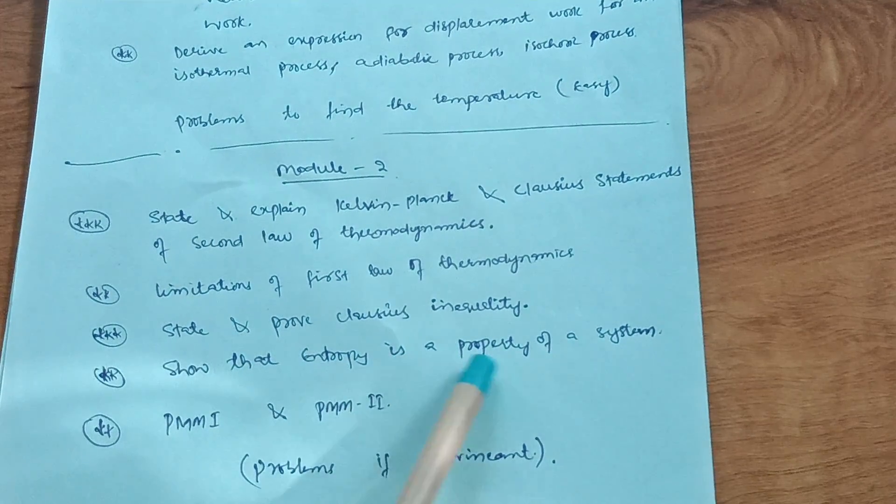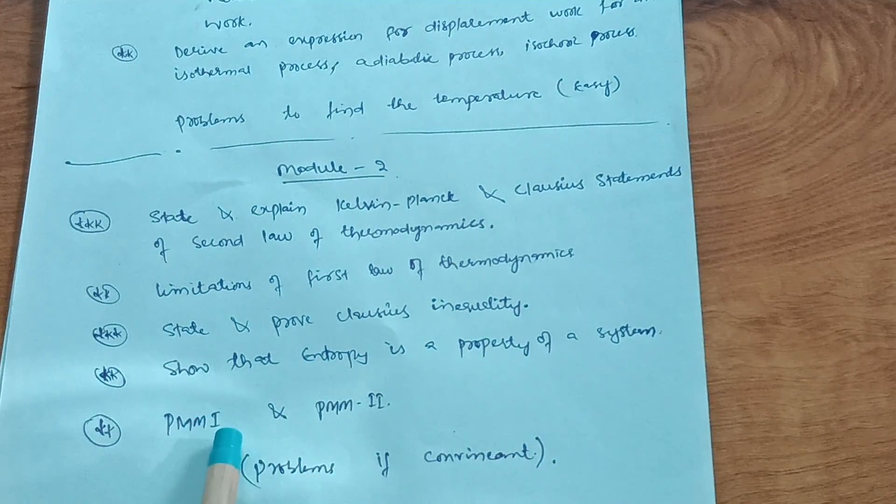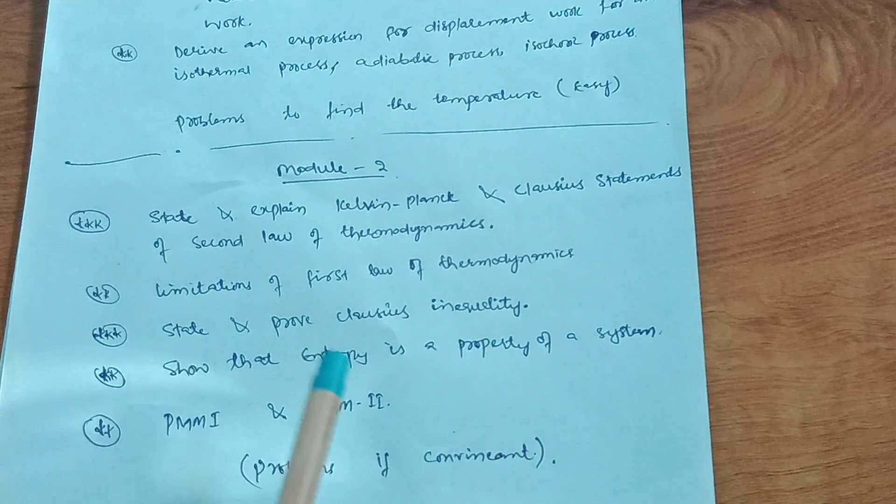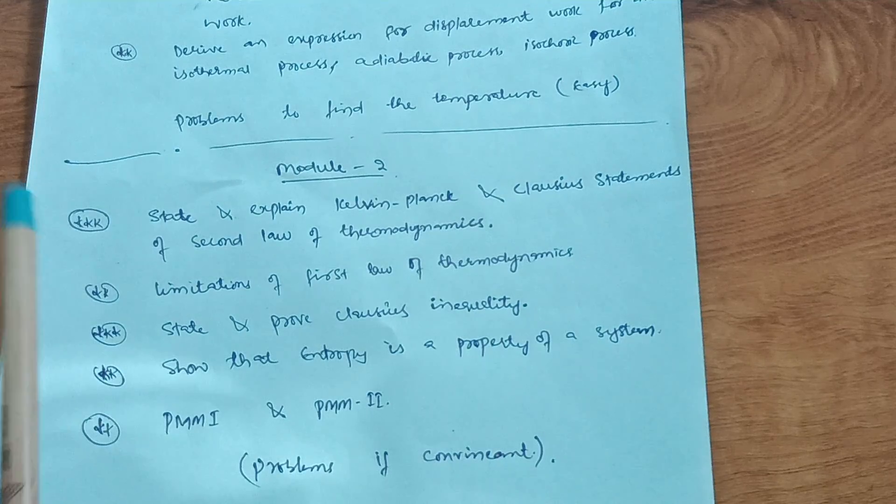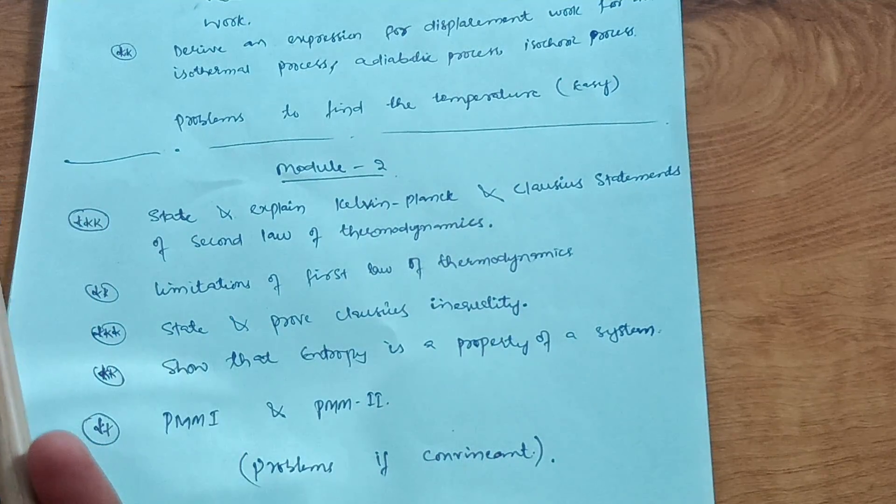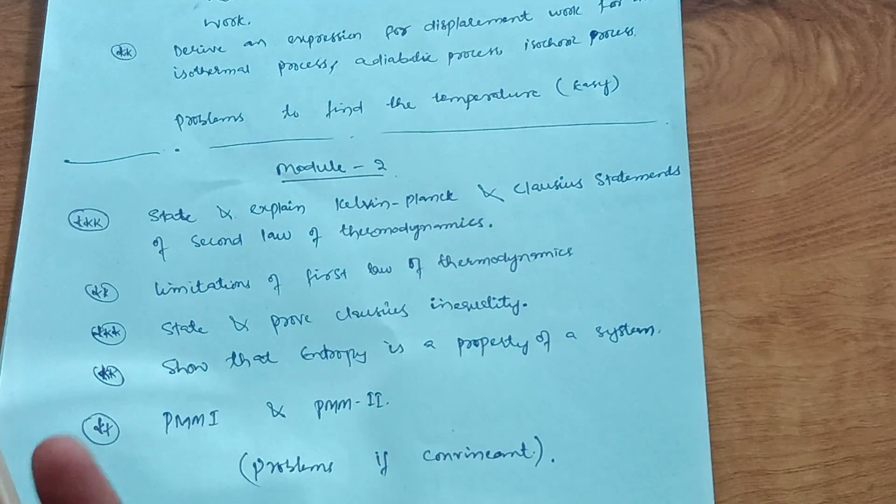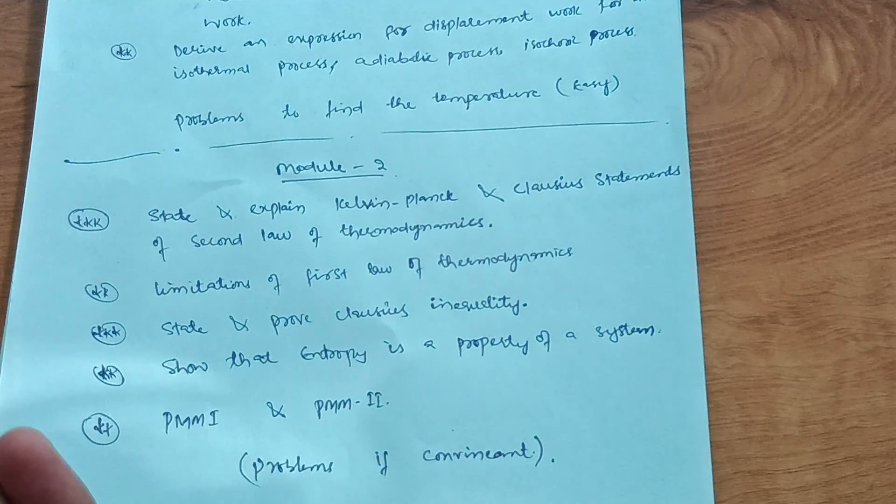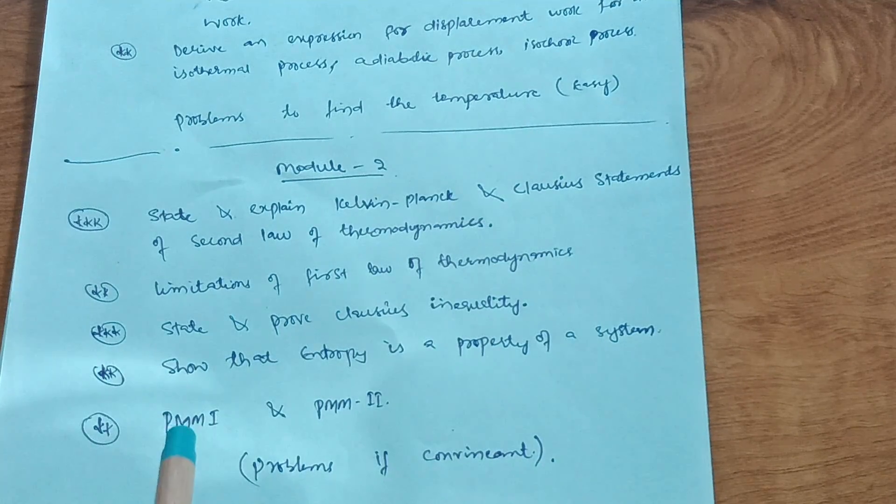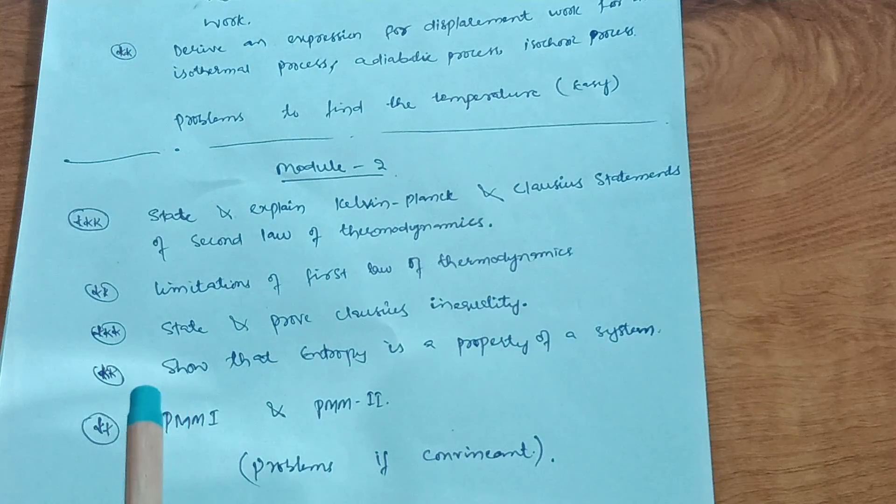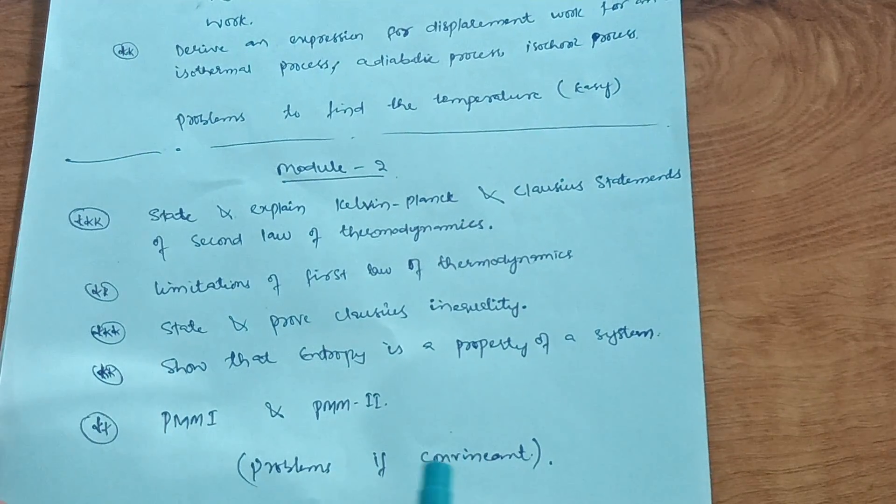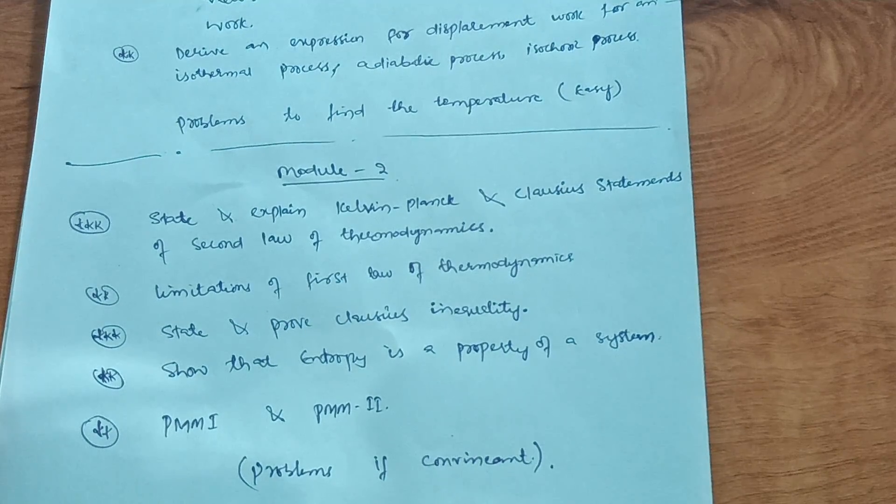Show that entropy is a property of a system. Also cover PMM-I (Perpetual Motion Machine First) and PMM-II. These are theory concepts which you have to cover from Module 2. Try some problems also if you are convenient, just because this subject is very typical to handle. Unexpected papers are coming, sometimes it depends upon your luck.